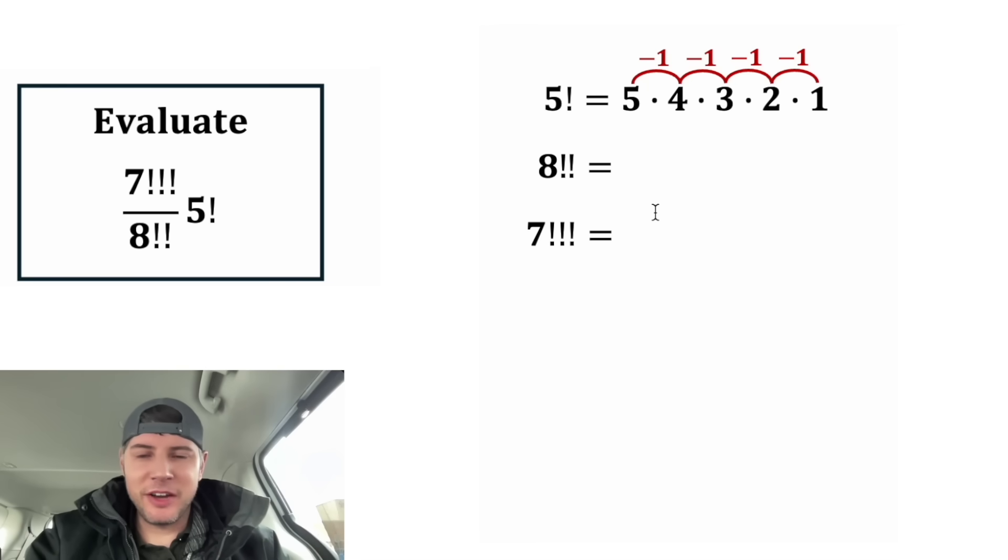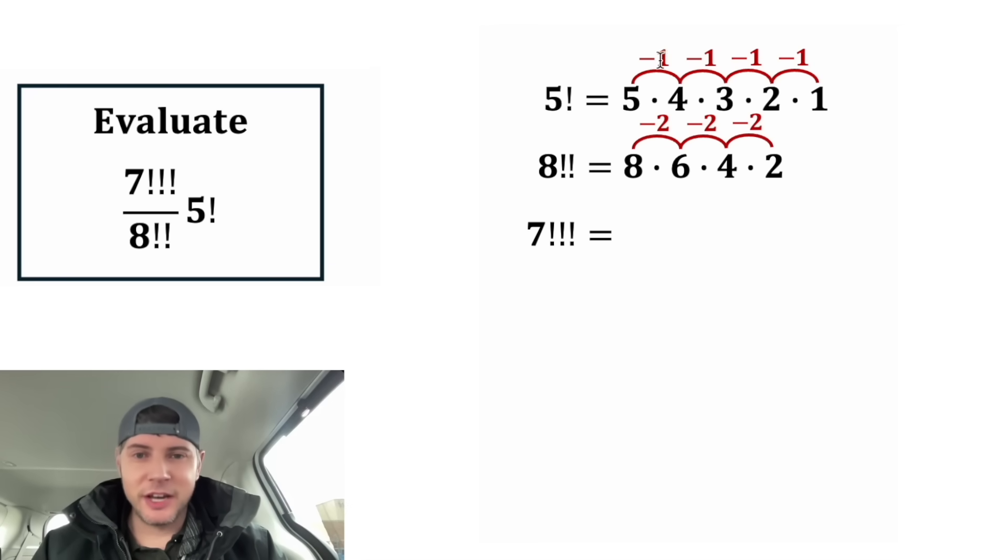Now with 8 double factorial, we start with 8, but then we go times 6 times 4 times 2. We decrease by 2 each time. That's what the double factorial is signifying. Instead of going down by 1 each time, we go down by 2 each time.